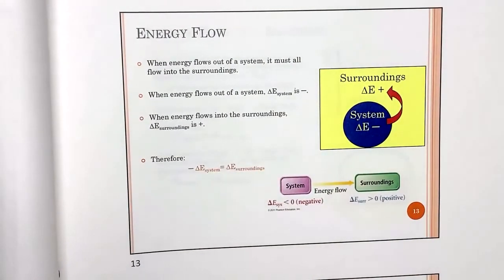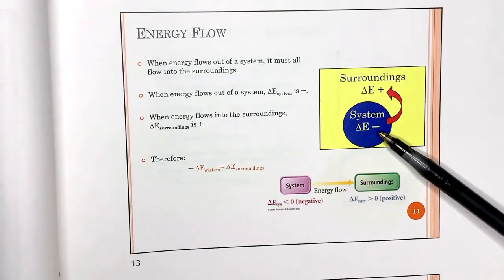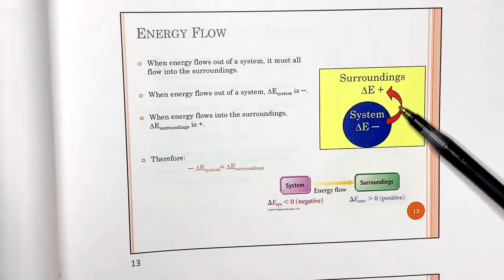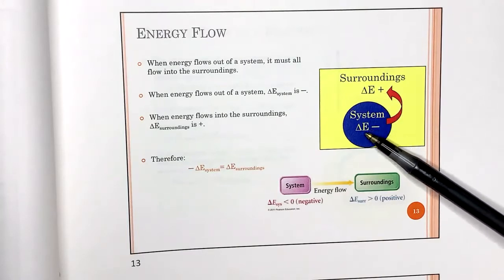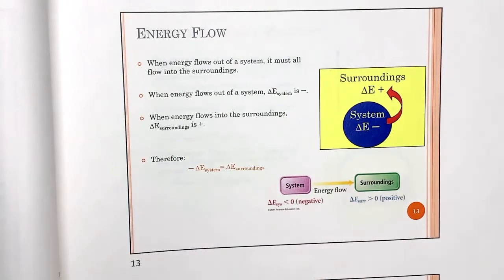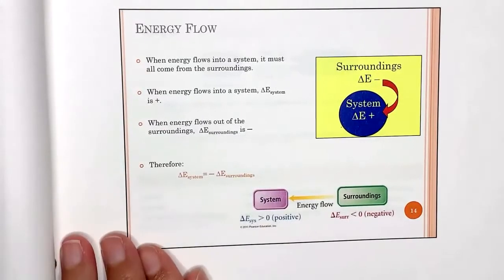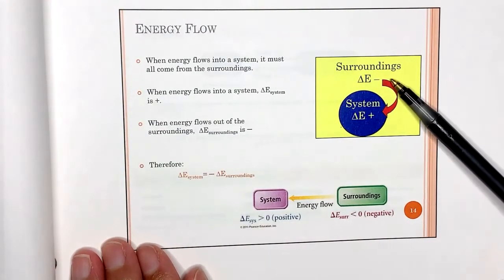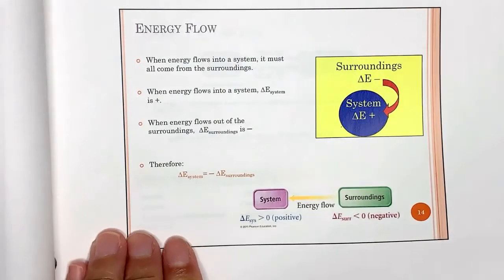In energy flow diagrams, a negative sign for the system means the system is losing energy to the surroundings, which then has a positive sign. These numbers are exactly equal and opposite so they add up to zero. Conversely, if the system gains energy, the surrounding has a negative sign and the system has a positive sign.